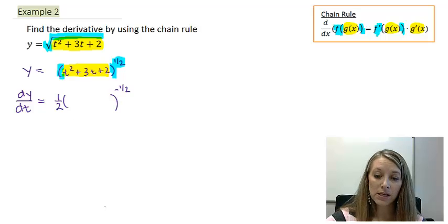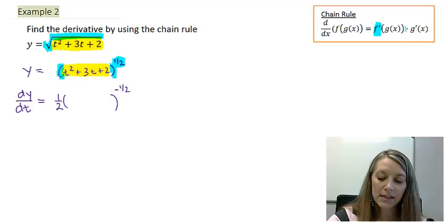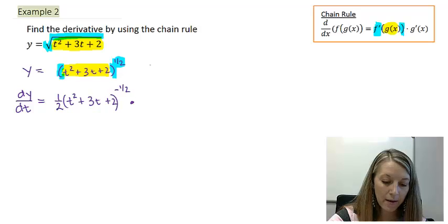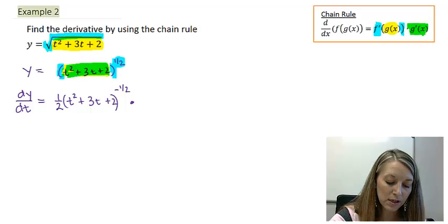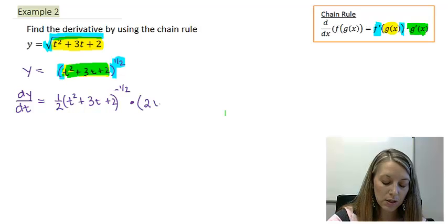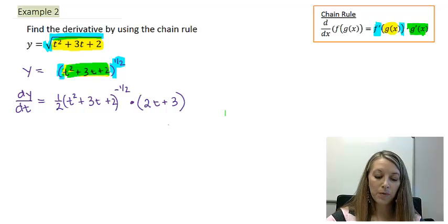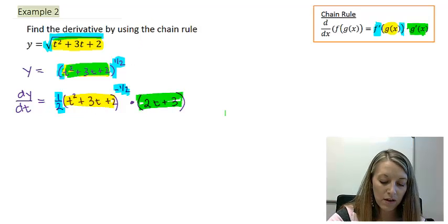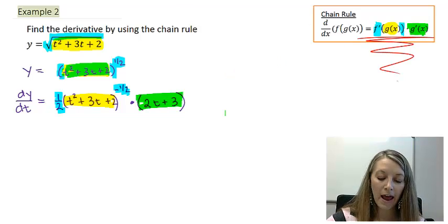That stays my outside function, identifying as f prime. But my g prime stays the same — I must keep the inside piece, t squared plus 3t plus 2. Then I multiply by the derivative of my inside function: the derivative of t squared gives me 2t, the derivative of 3t gives me 3, and the derivative of 2 is a constant that just disappears. So I have the derivative of my outside, keeping the original inside, times the derivative of the inside — this matches my chain rule.